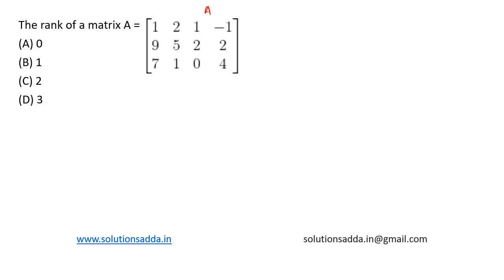Now we eliminate elements in column one under the first element. That is, we try to eliminate these two elements. That is the first step. So we perform the following transformations: R2 is R2 minus 9R1, and R3 is R3 minus 7R1.